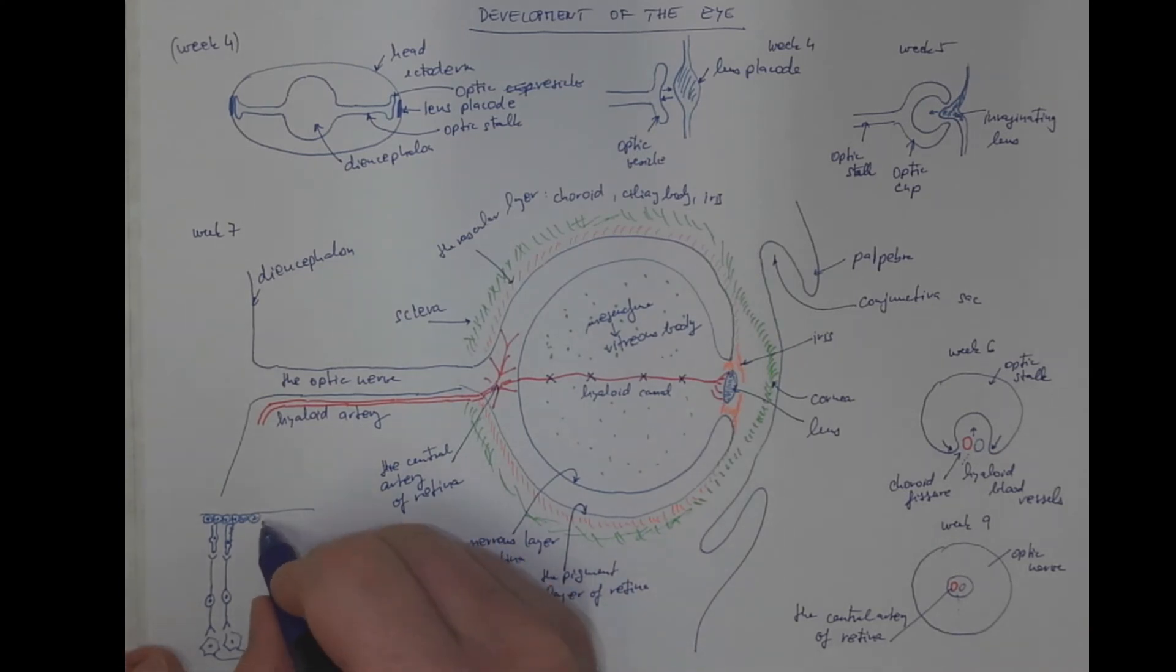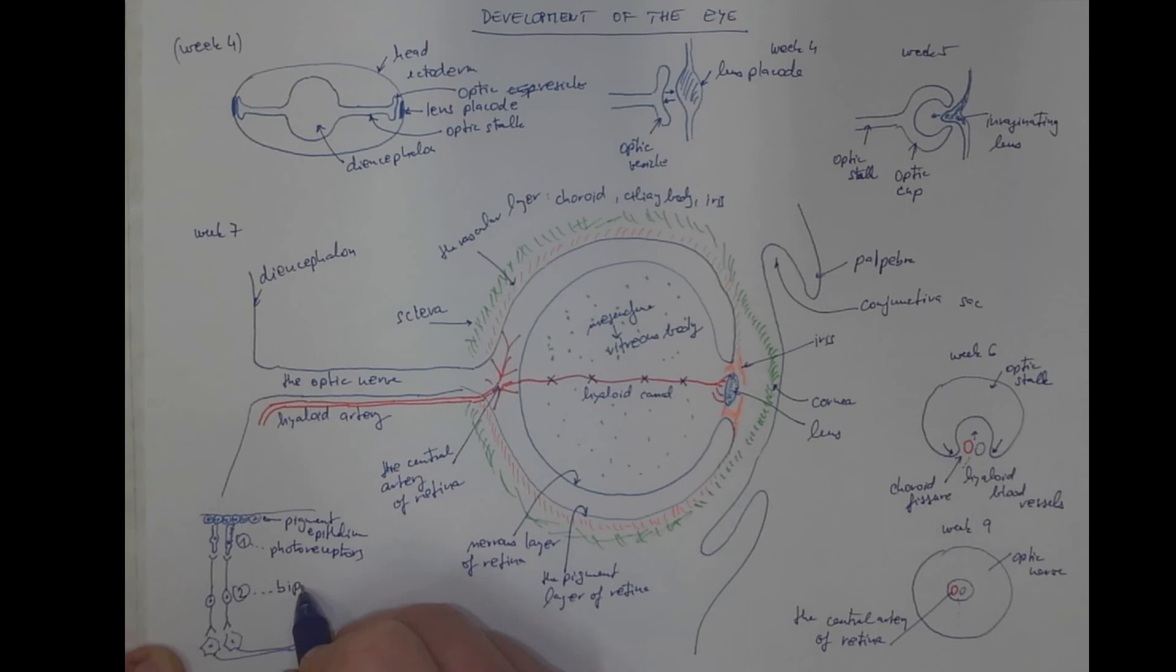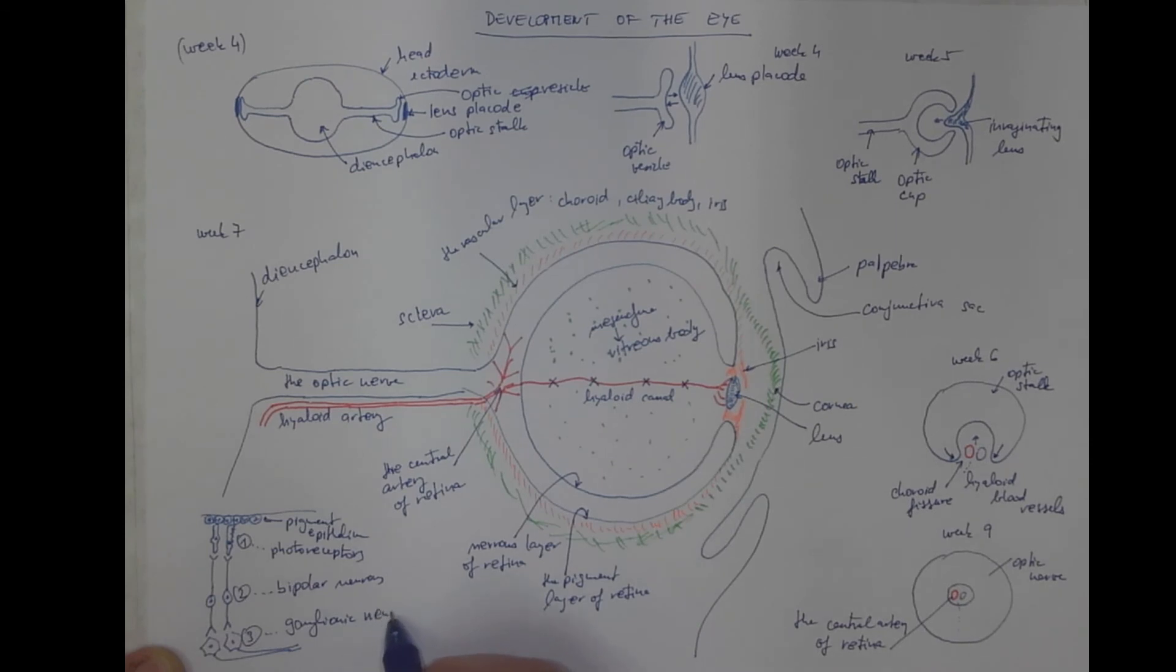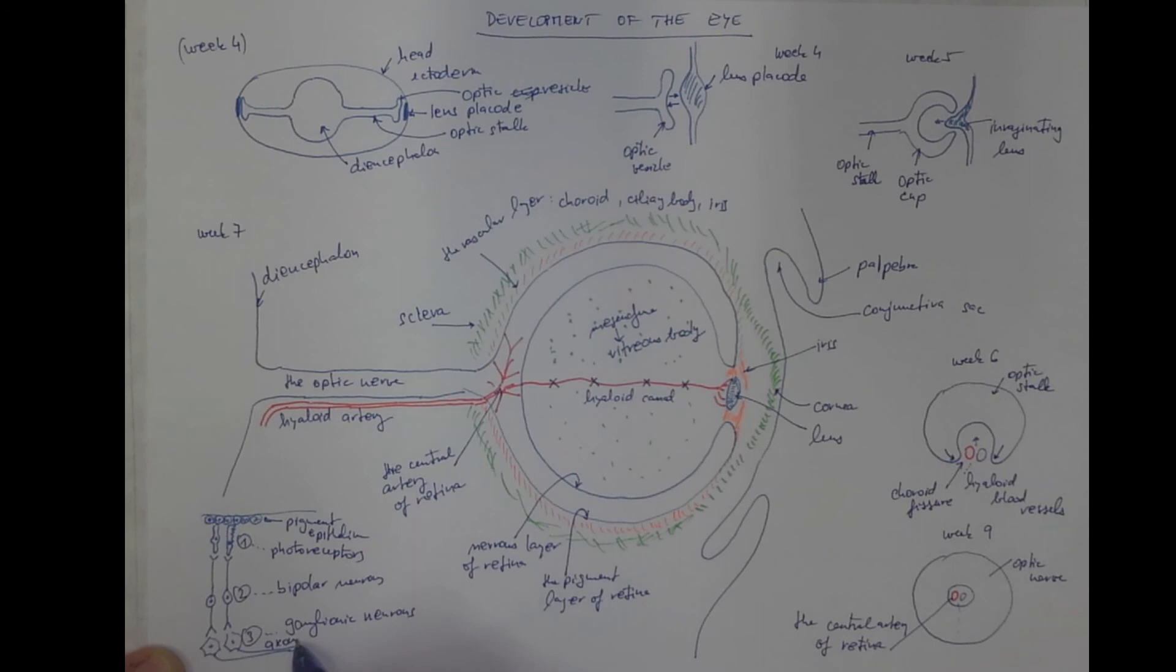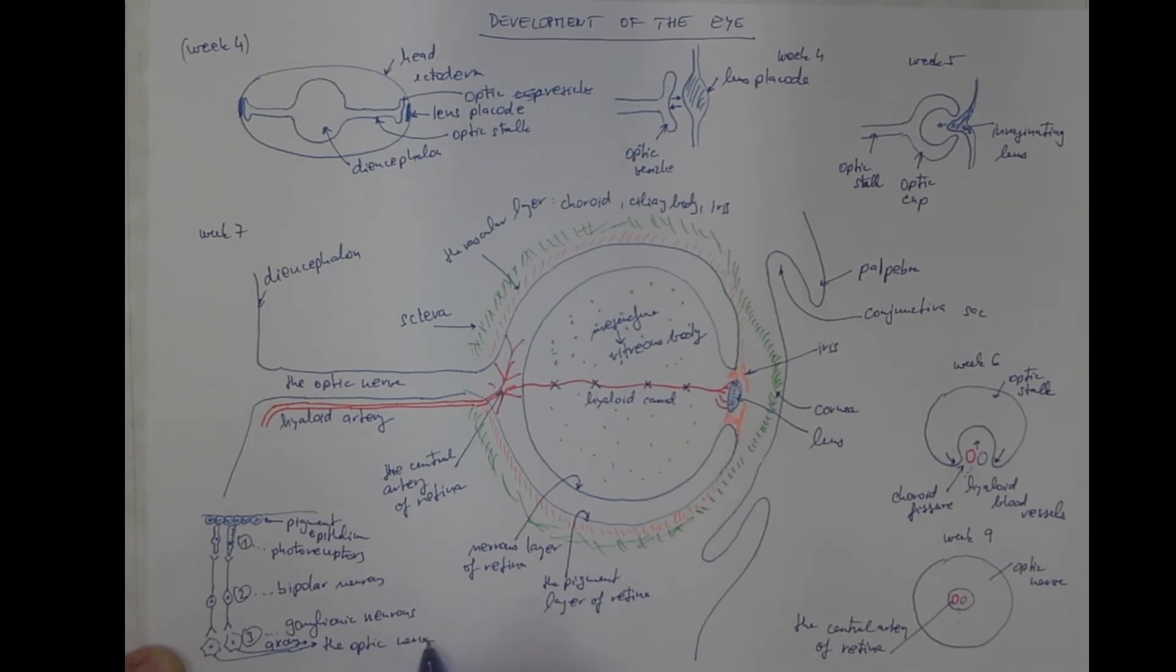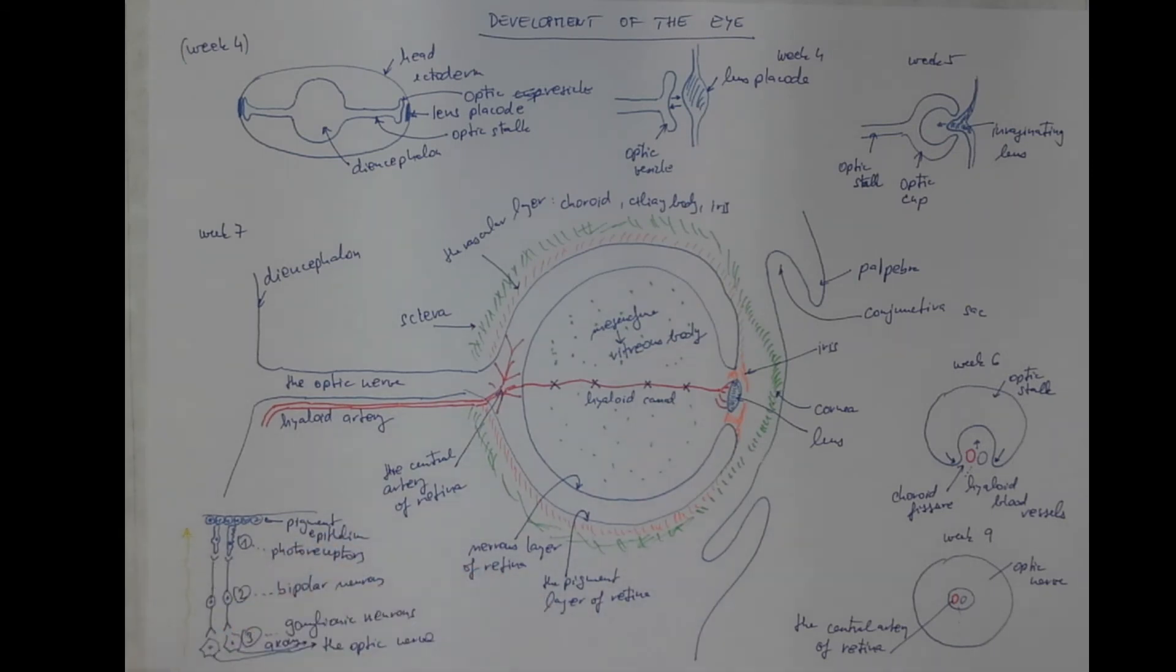So this is the pigment epithelium, the outer one. This is the first layer of neurons, the photoreceptors. The second layer, the bipolar neurons. And the third are the ganglionic neurons of retina, the axons of which constitute the optic nerve. That's not the complete structure of retina, just the order of the neurons. By the way, the light comes from this direction to the photoreceptors, through the thickness of the retina.